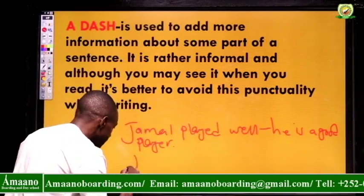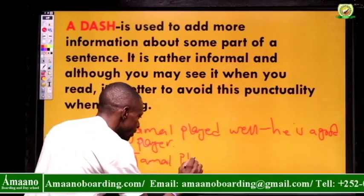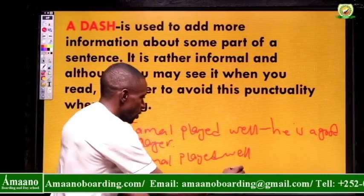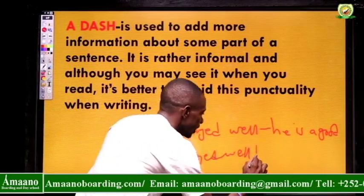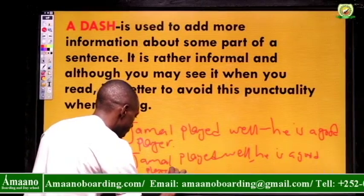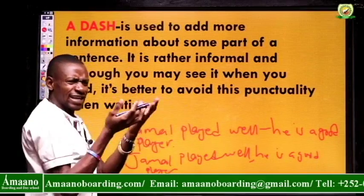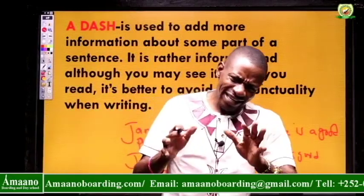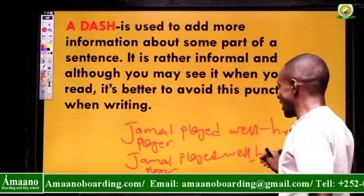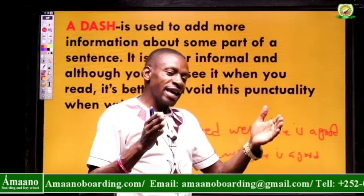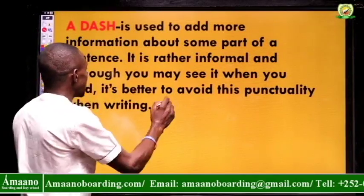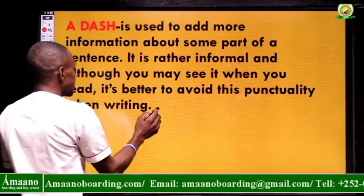To avoid that informality and maintain the formality scale, you can say 'Jamal played well. He is a good player' — using a conjunction instead. You tend toward the formal scale; you don't get to the informality scale. So we avoid the dash and instead use a conjunction to combine the sentences in a more formal way.